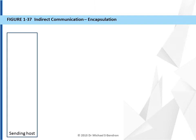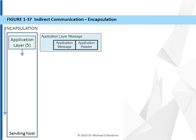When a sending host desires to send a message to a receiving host, it does so through indirect communication. It must encapsulate its messages so that the receiving host can decapsulate them for use by the appropriate process or layer on the receiving host. Encapsulation refers to the process of taking the protocol data unit, or the message from a layer above yours, and placing it into the payload of your message.